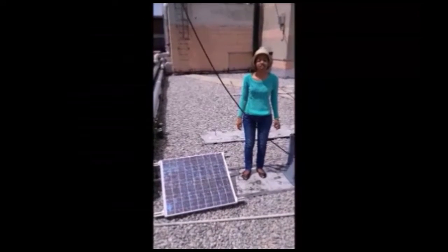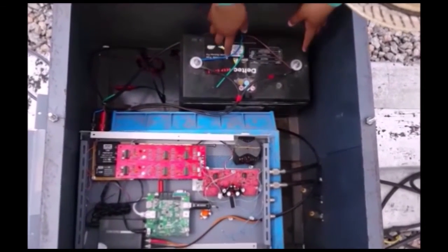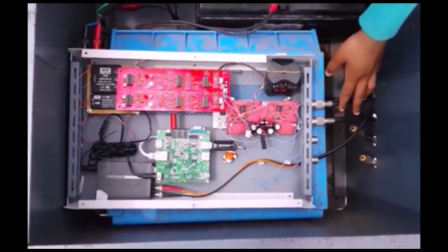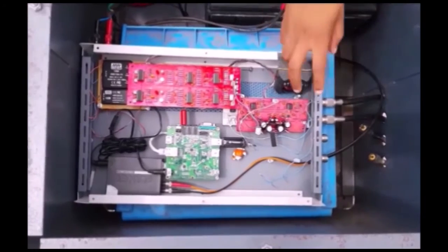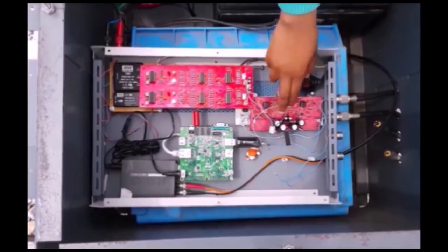This is the old VLF system. This is the solar panel connected to the battery which stores power, and these are the cables of the antenna, the loop antenna connected to the impedance matching transformer which is connected to the pre-amplifier.